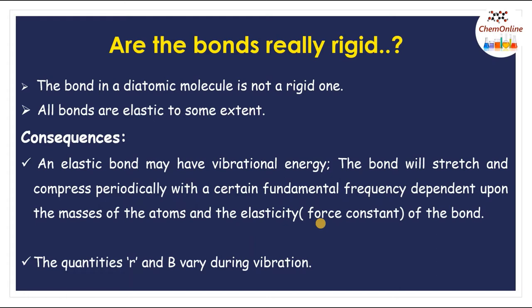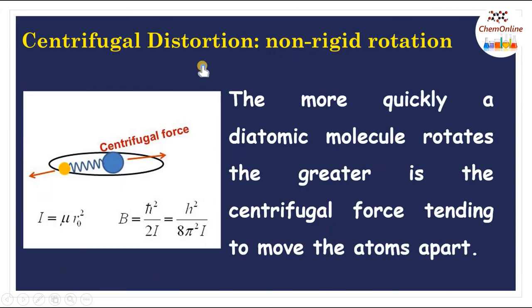The second consequence is that the quantities R and B vary during vibration, where R is the bond length and B is the rotational constant. Now comes an important term: centrifugal distortion.